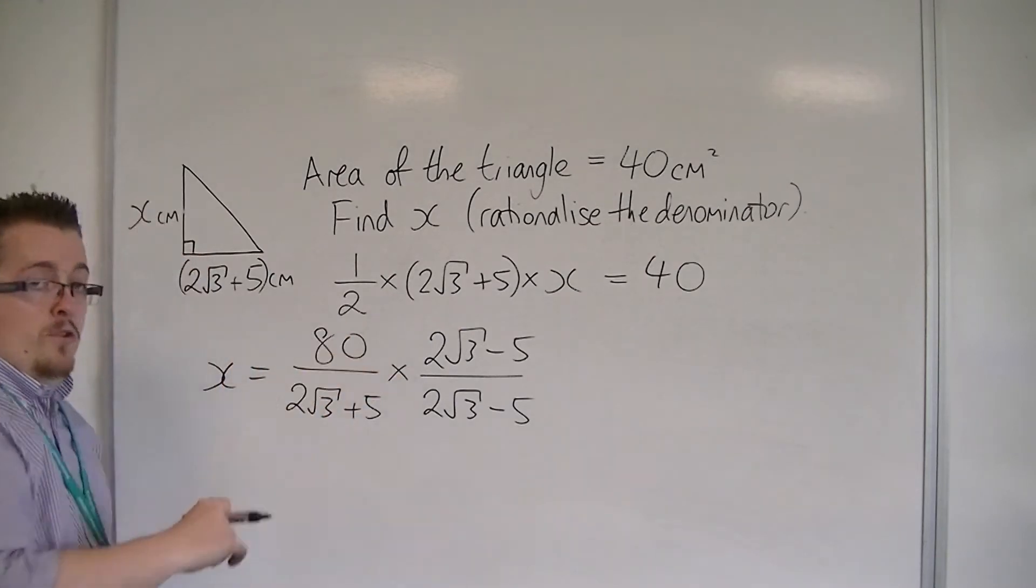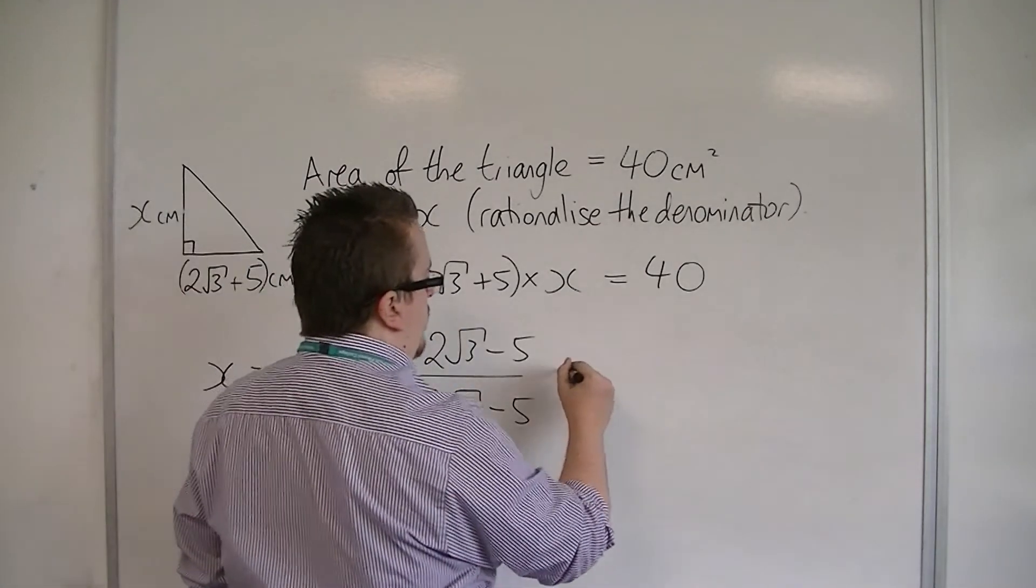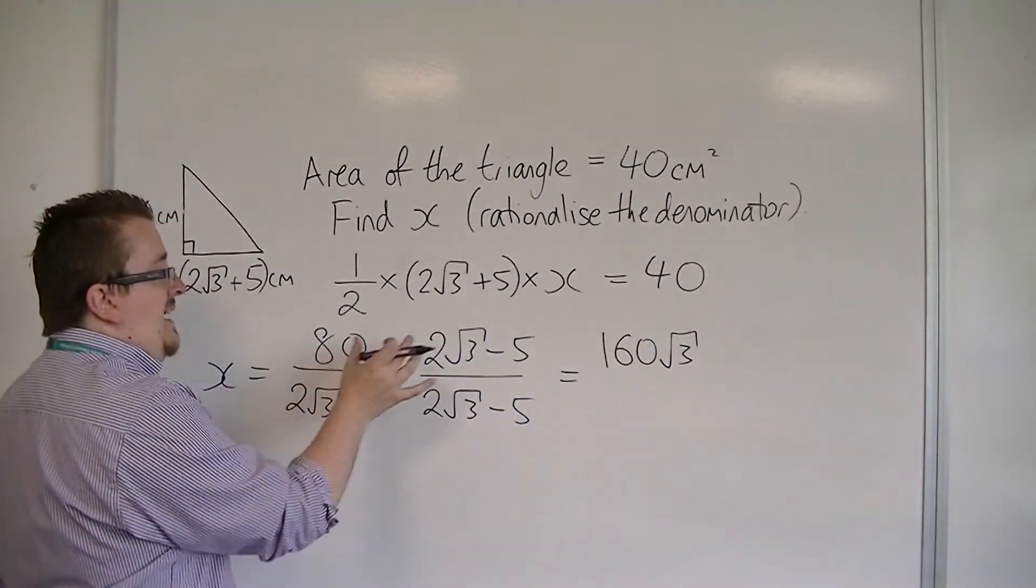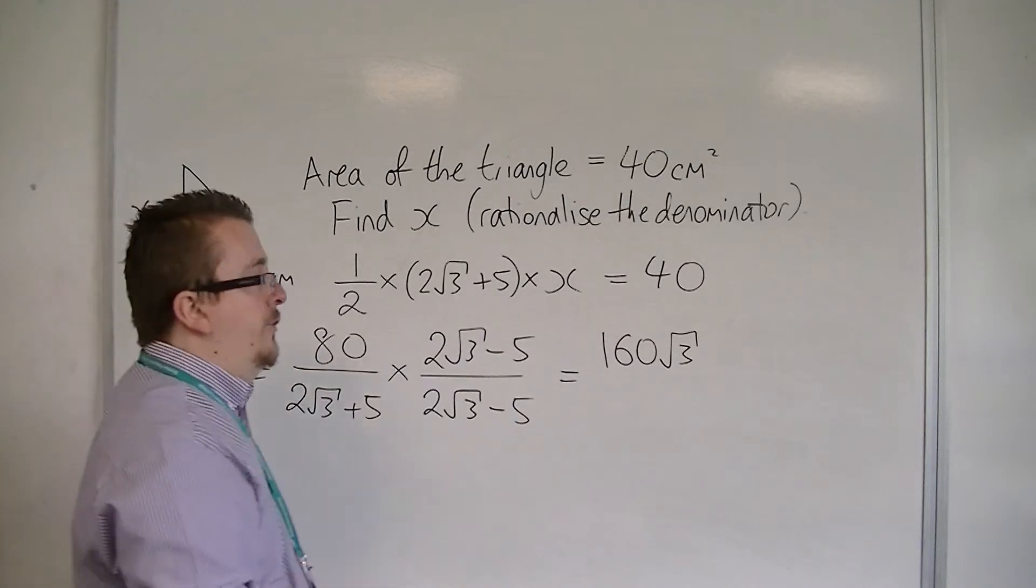I'm going to multiply through. 80 times 2 root 3 is going to be 160 root 3, and then 80 times minus 5 will be minus 400.